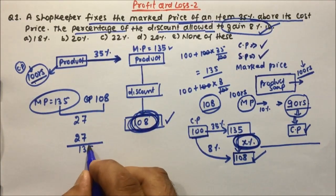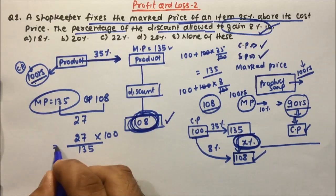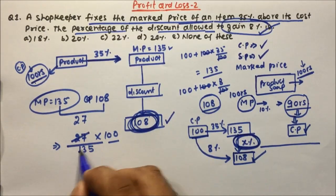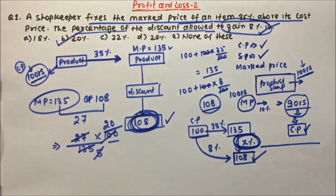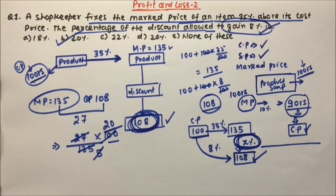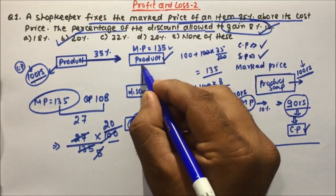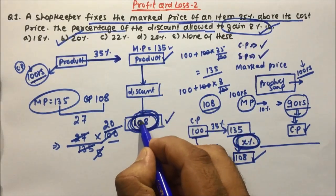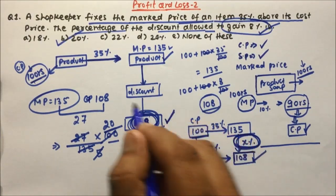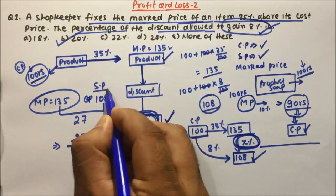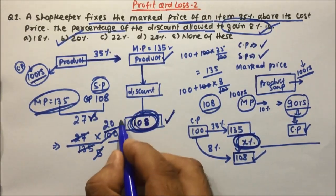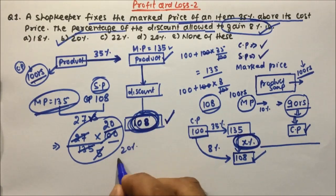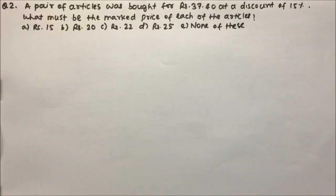To calculate the discount percentage: 27 divided by 135 multiplied by 100. Simplifying, 27 by 135 gives 1 over 5, and multiplied by 100 gives 20 percent. So option B, 20 percent, is the answer. The marked price is printed on the product; after the discount is applied, that becomes the selling price. The shopkeeper is selling at 108 rupees with a marked price of 135 rupees, giving a discount of 27 rupees, which is 20 percent.